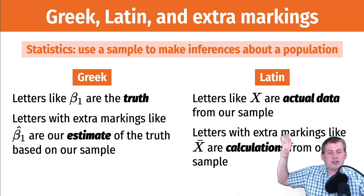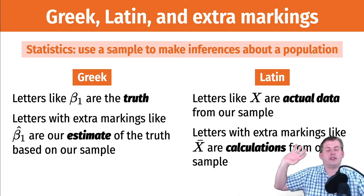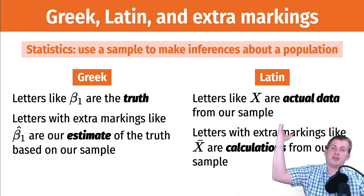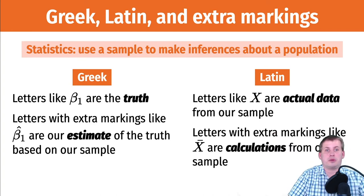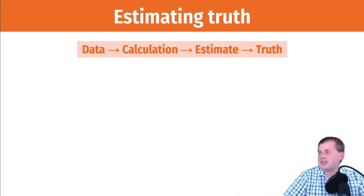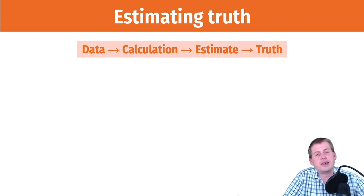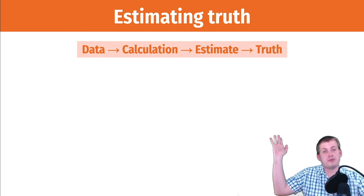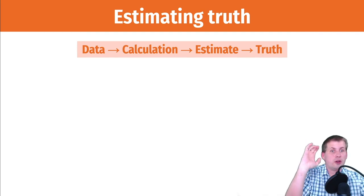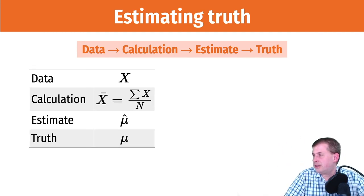The Latin side is actual data we see in our data set. The Greek side is more ethereal — some sort of truth we're trying to measure. The Greek hat version is what we can actually estimate and what we hope is close to that truth. We collect data, calculate a statistic like an average or a regression coefficient, and assume that is an estimate of the truth.